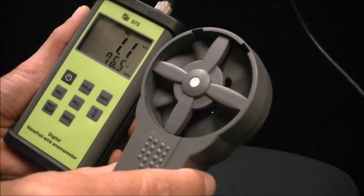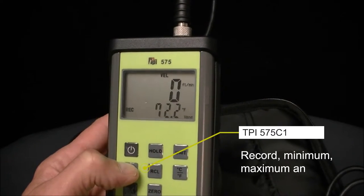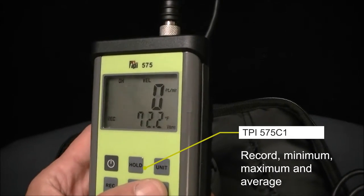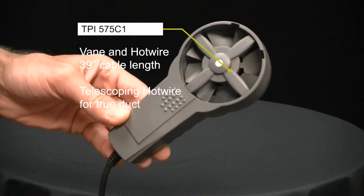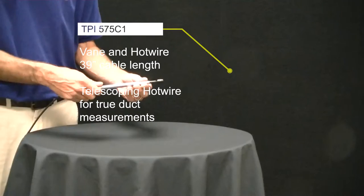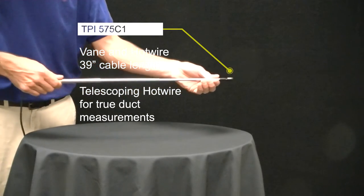The TPI 575C1 not only measures air velocity but temperatures as well. The hot wire and vane probes both have a 39 inch cable. The hot wire also telescopes so a true duct in velocity and temperature can be obtained.